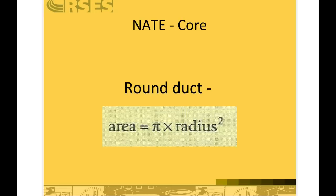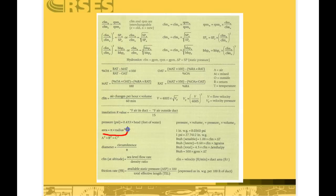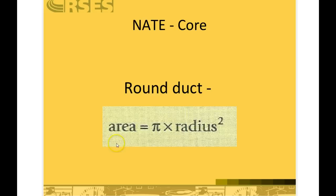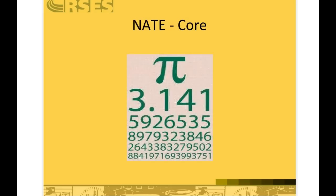When we're talking about round duct, here is where you need to know your formulas and how to work your calculator. The formula for the round duct is right here on your NAIT formula page. That formula is area equals pi times radius squared. Again, here it is on your NAIT formula page.